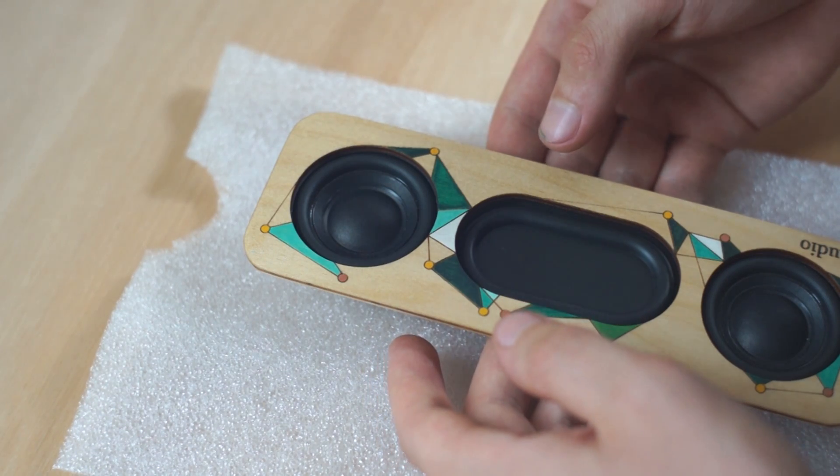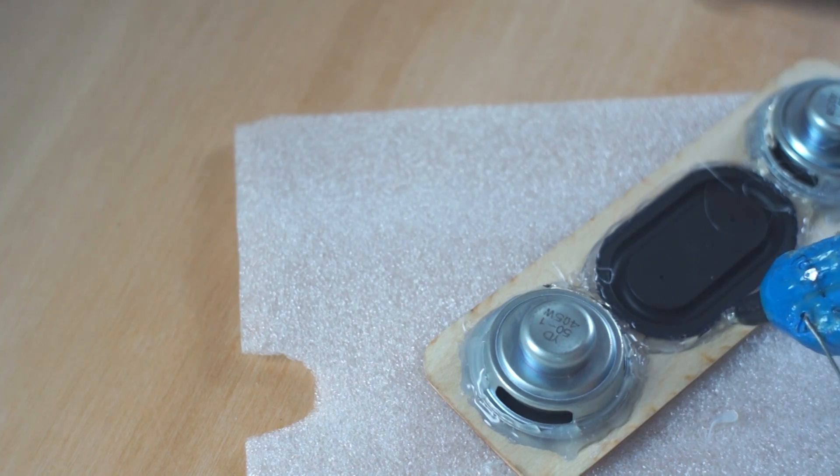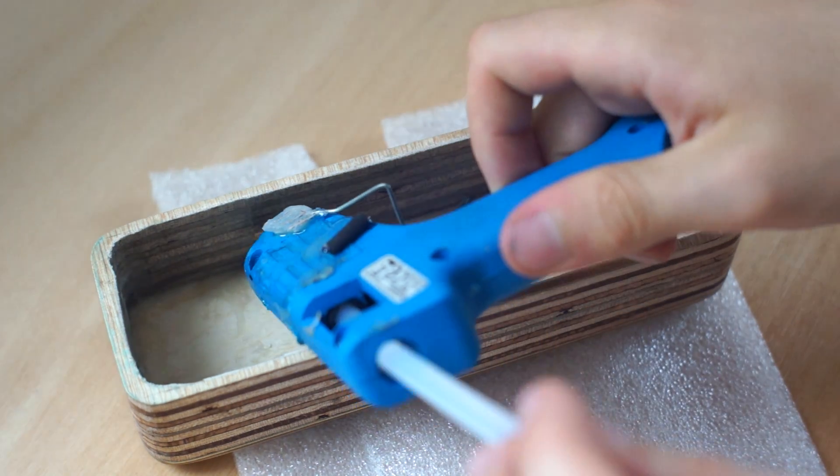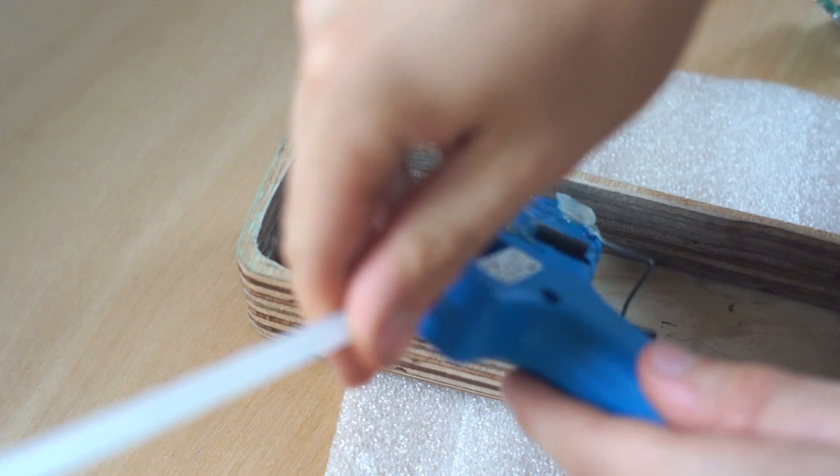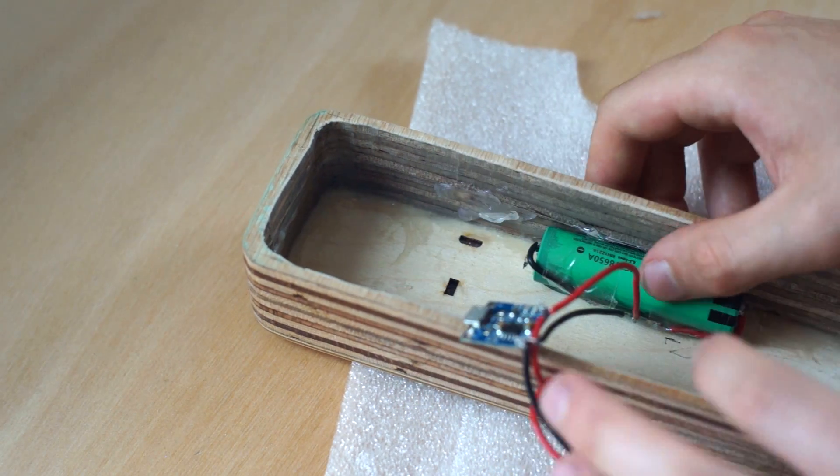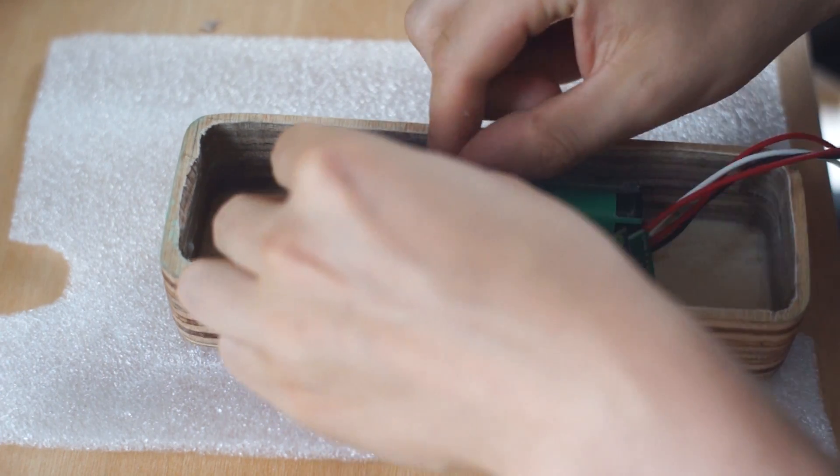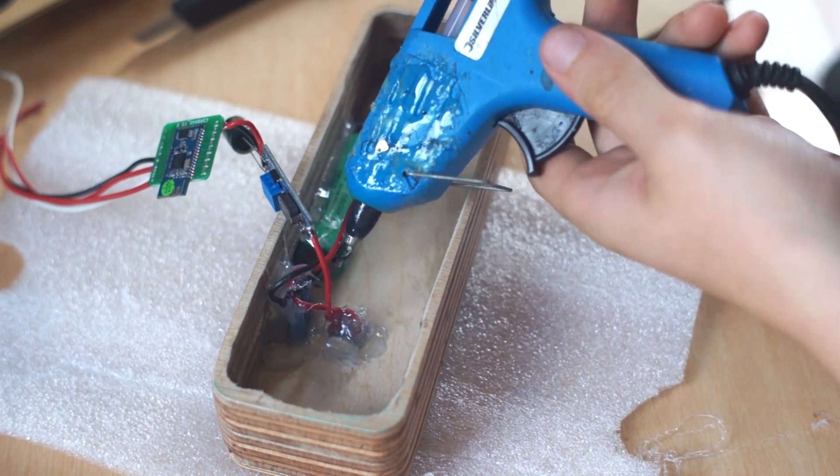And now we're going to repeat the same thing for the passive radiator and the other driver. Now it's time to add hot glue to the enclosure and then we're going to stick in the battery, and now we're going to repeat the same process for the charging board and the switch.